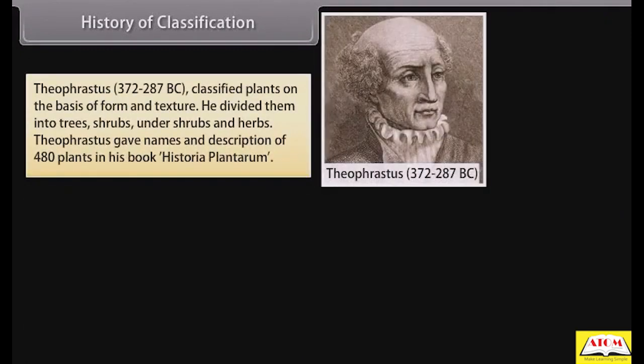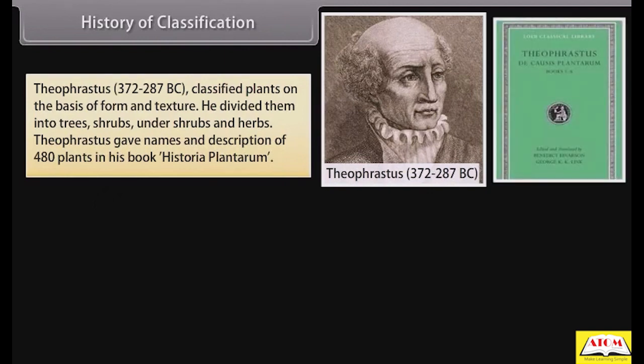Theophrastus (372–287 BC) classified plants on the basis of form and texture. He divided them into trees, shrubs, undershrubs, and herbs. Theophrastus gave names and descriptions of 480 plants in his book Historia Plantarum.